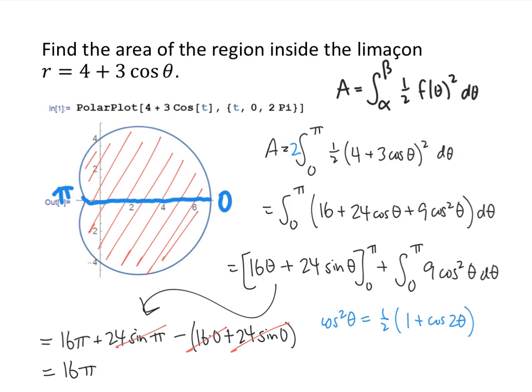Okay so we got up to 16π plus the integral from 0 to π of 9 cosine squared of theta d theta. And what we know is that we've got to use half-angle formula.